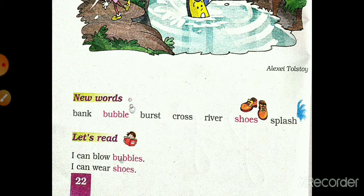River — R-I-V-E-R — river means nadi. Shoes — S-H-O-E-S — shoes means joote. And the last one is splash — S-P-L-A-S-H. Splash means dhadak — paani mein jo awaaz aati hai jab koi cheez girti hai, woh dum si dhadak si awaaz aati hai, isko bolte hain splash.